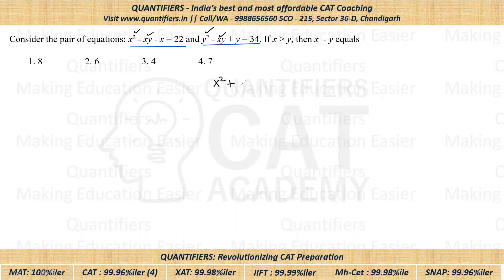So on adding, we'll get X² + Y² - 2XY - (X + Y) = 34 + 22, which is 56.